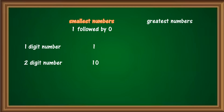Similarly, to form the smallest 3-digit number, we write 1 followed by two 0s to get 3 digits. The smallest 3-digit number is 100.